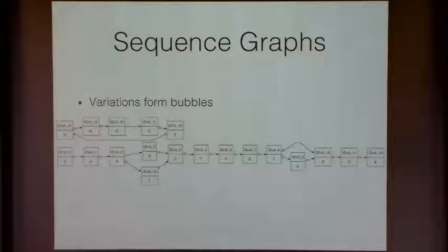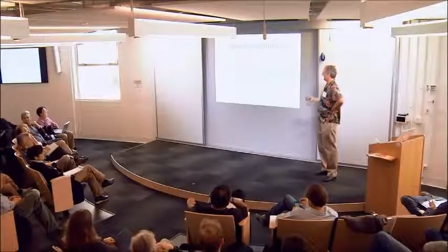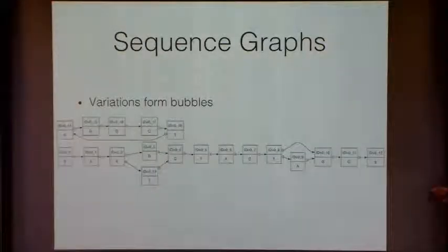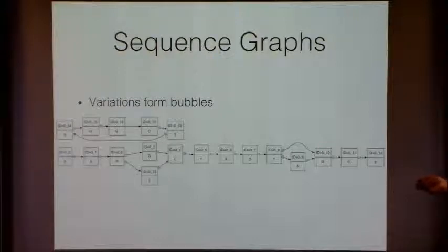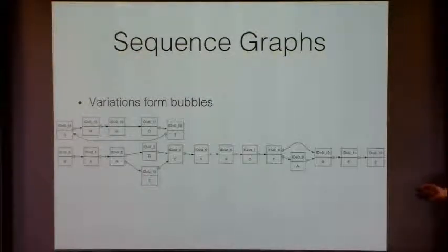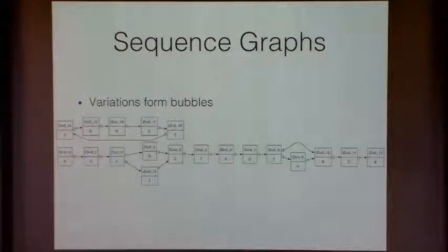Suppose you have two SNPs in strong LD that are 50,000 bases apart. In the compressed version of this, you might lose phasing between them because you only have one set of nodes. If we replicated all of the nodes between these two variants, then we would have a phased representation. The drawback is that now we have more and more of the graph that looks identical or very repetitive. So when we start to tease apart things to create phasing, we get more repetitive structure within the graph, and we'll be talking about how to deal with that.